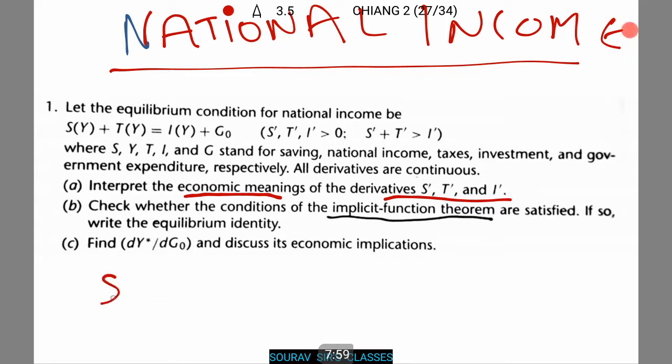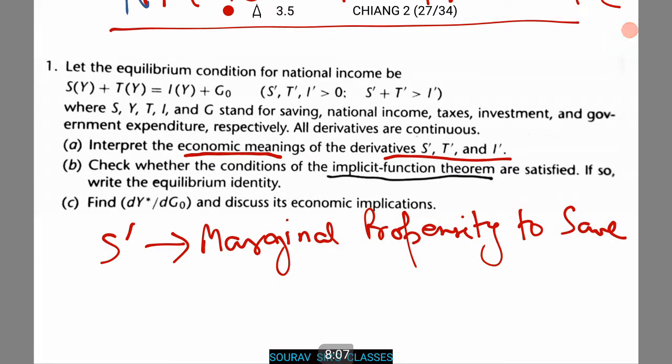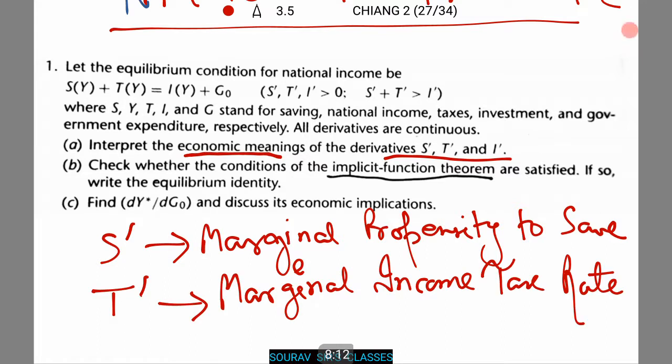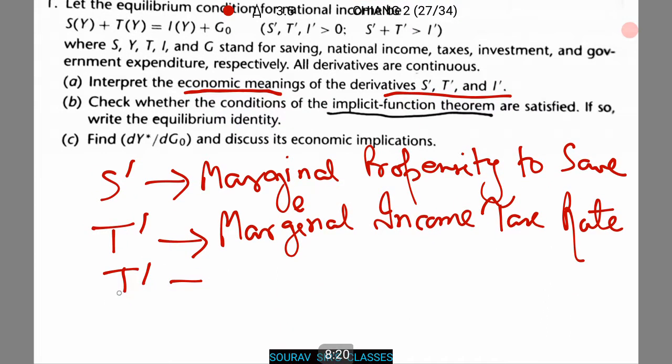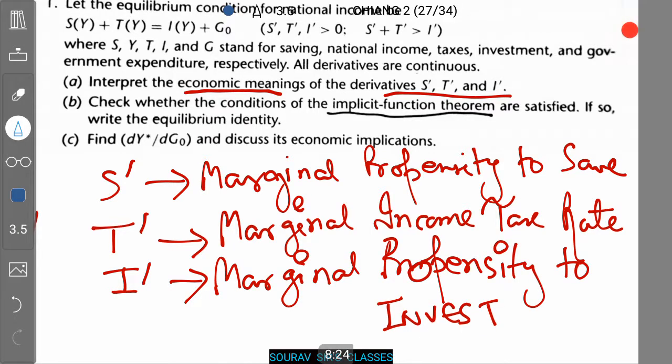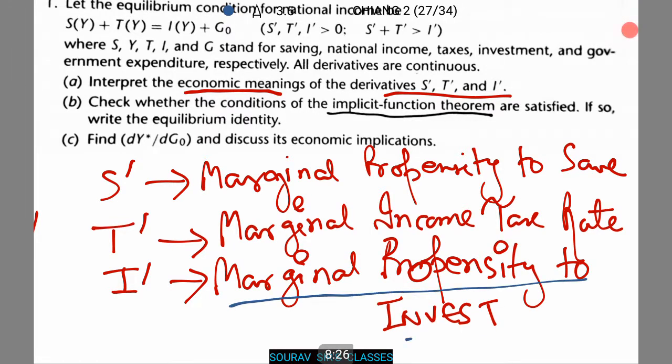Therefore S dash is the marginal propensity to save. T dash means marginal income tax rate and lastly I dash means marginal propensity to invest.